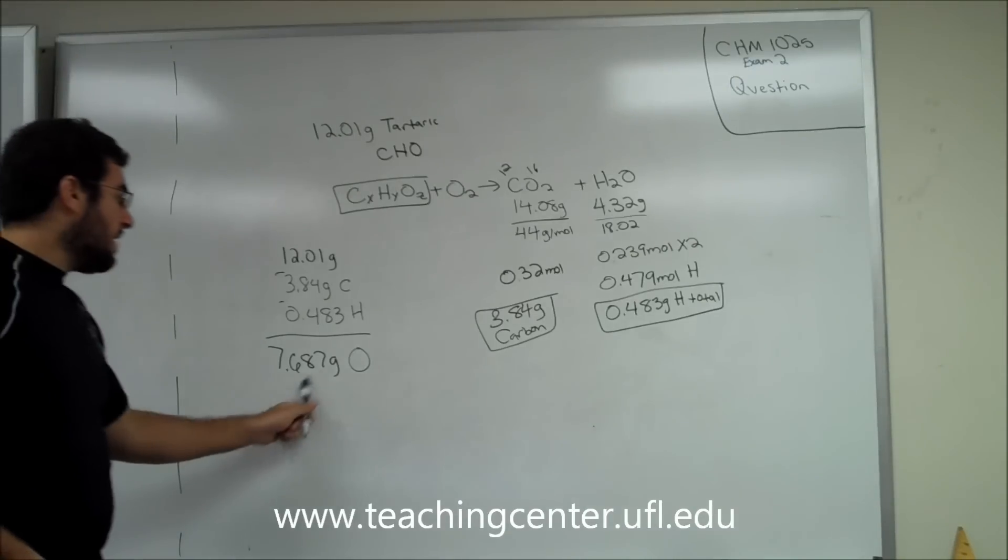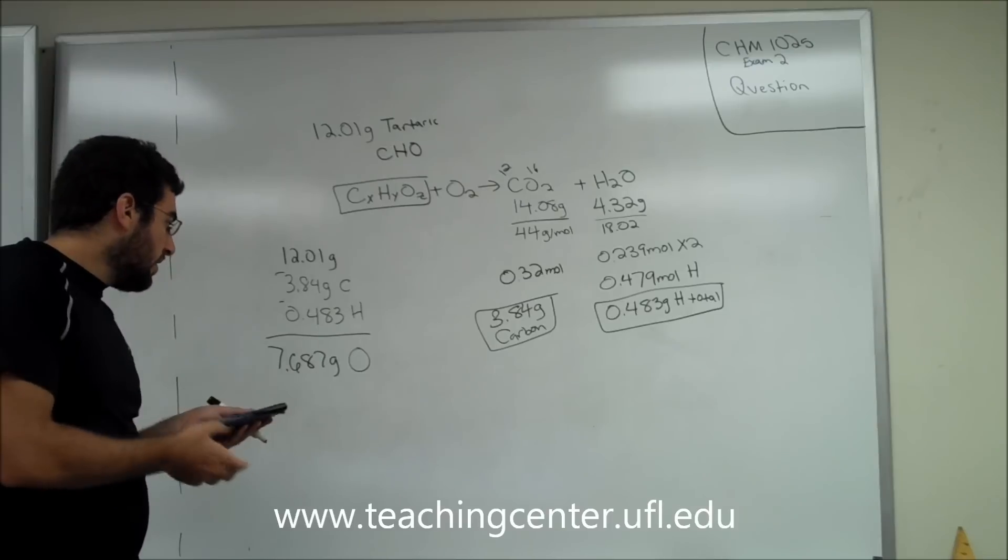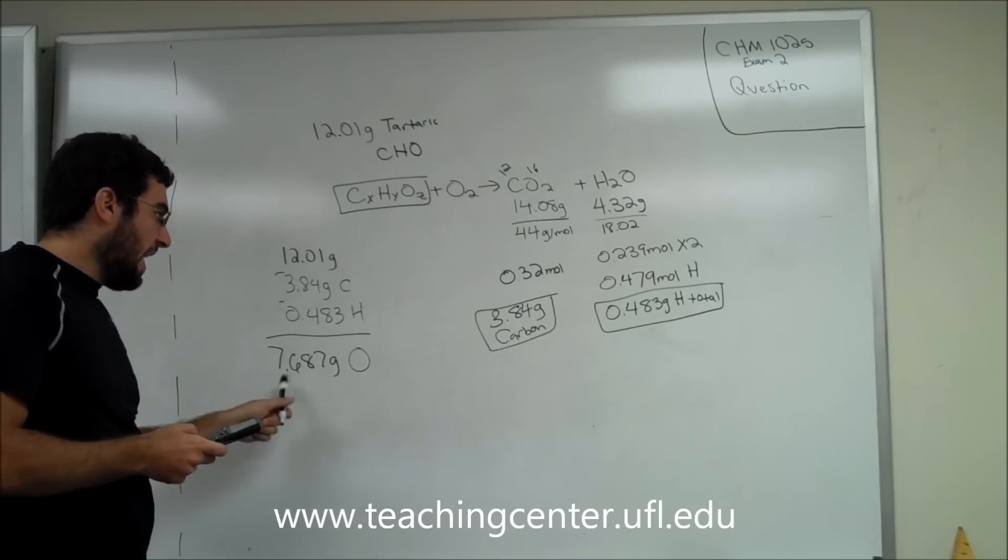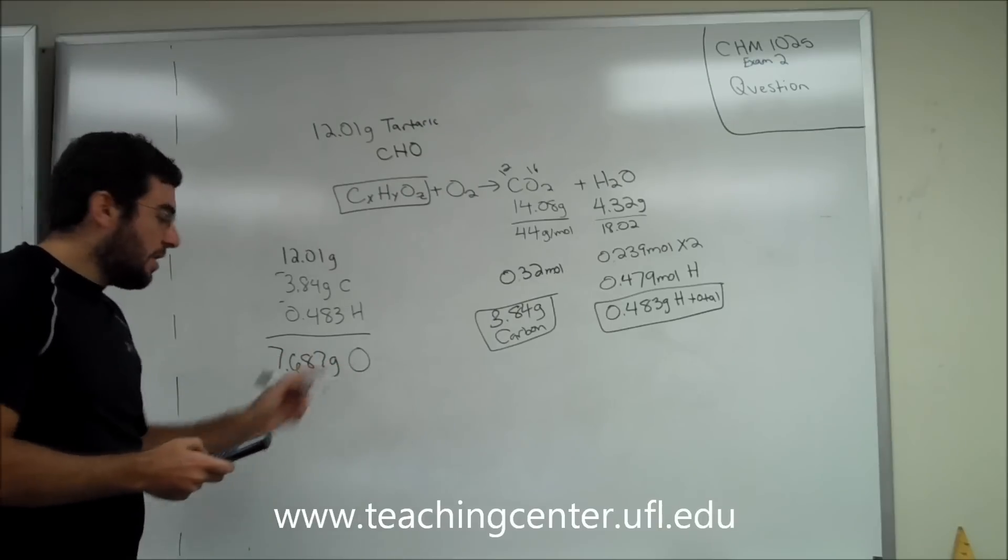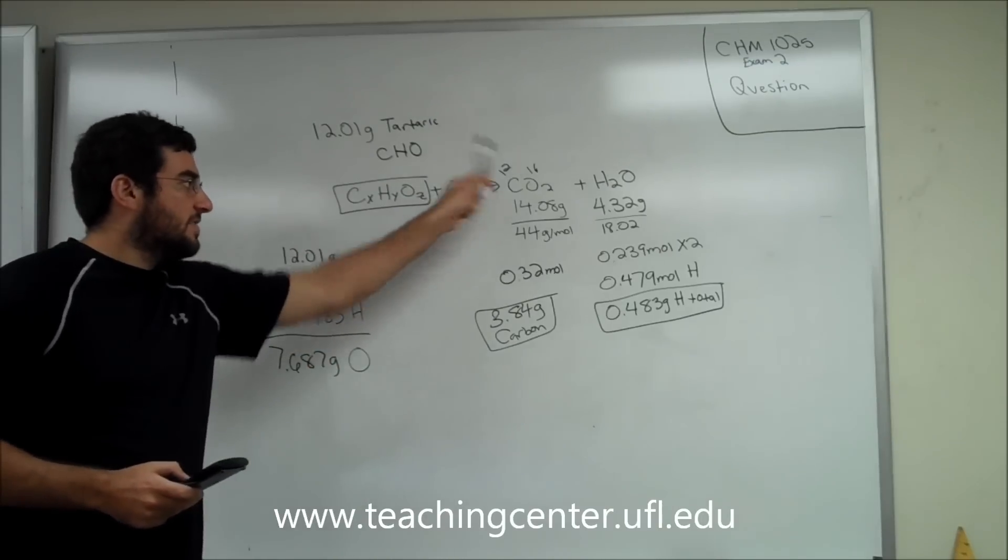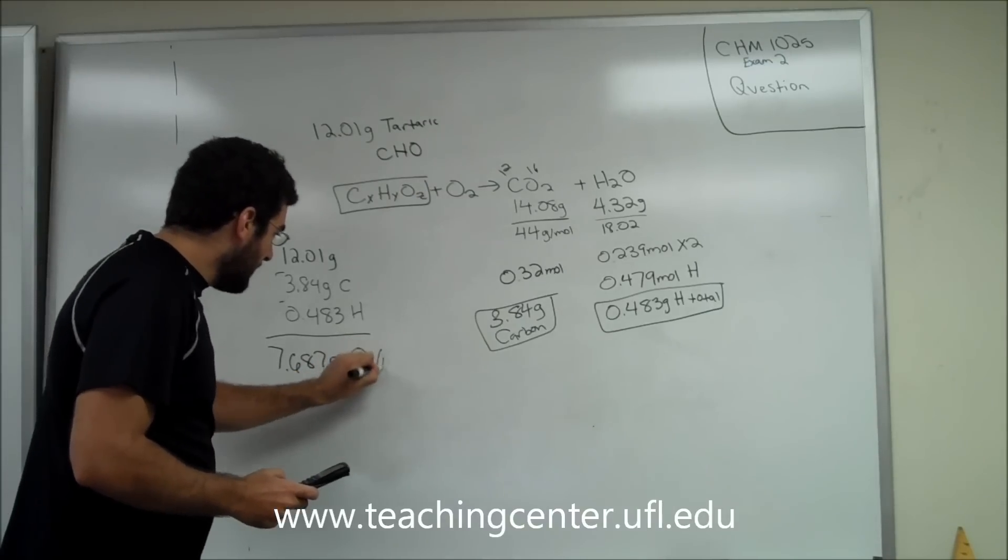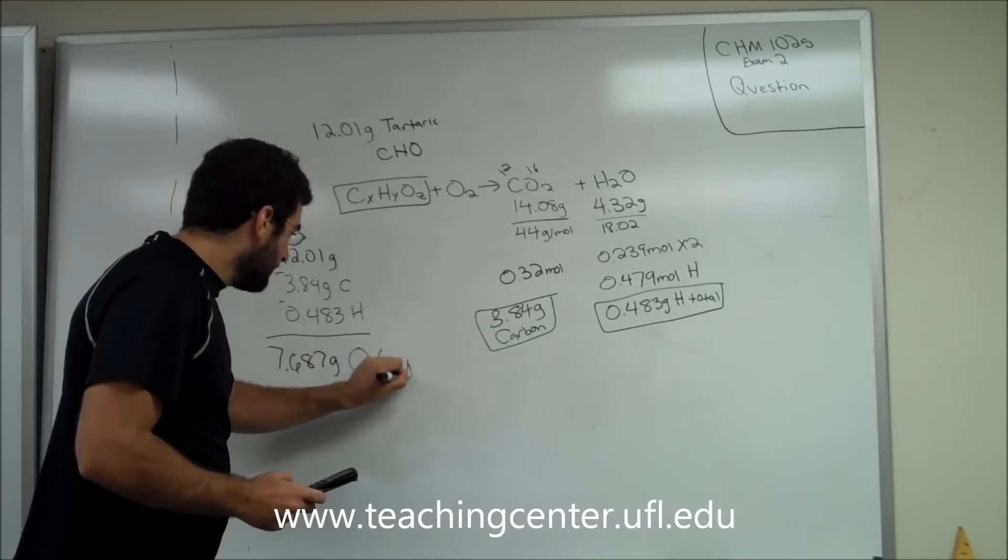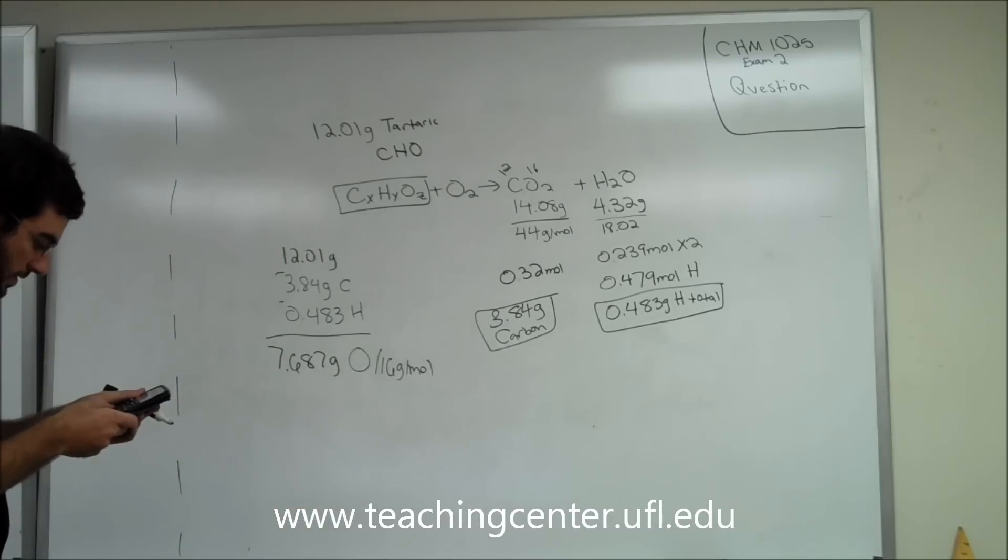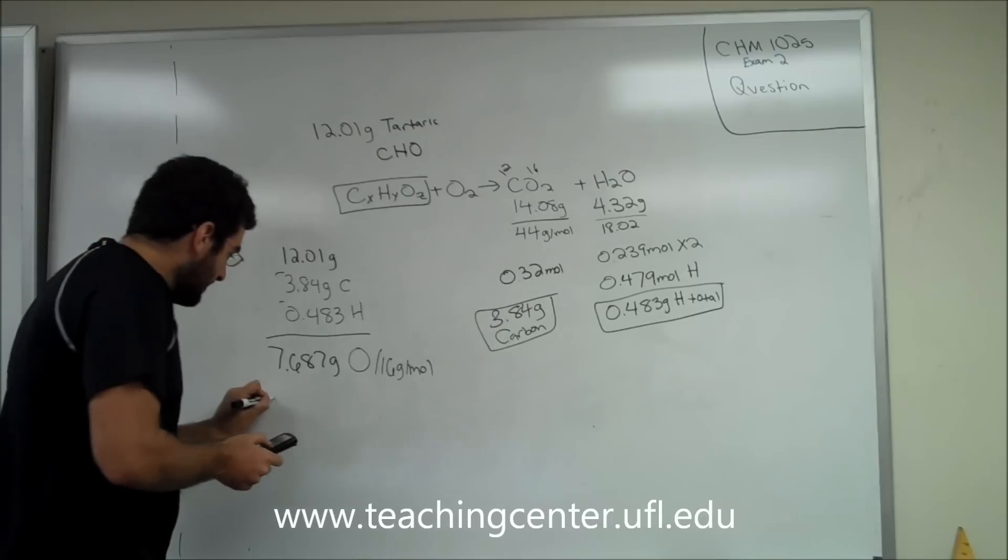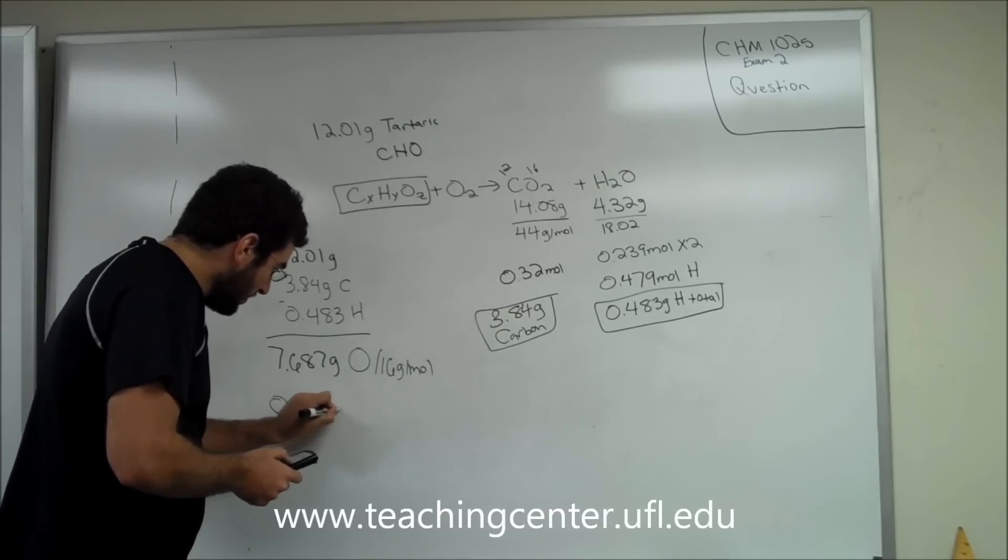Now, grams doesn't help us. It only helps us how much oxygen we have. In order to find out how much oxygen we have and to get back here, everything must be in terms of moles. So we know that oxygen has a molecular mass of 16, so let's go ahead and do 7.687 divided by 16 grams per mole, which gives us 0.480 moles of oxygen.